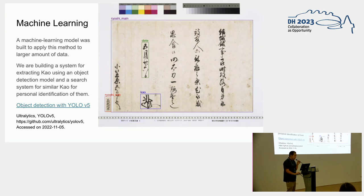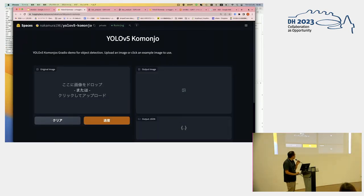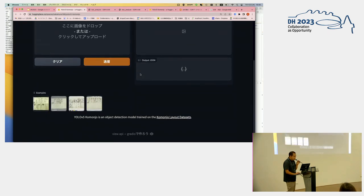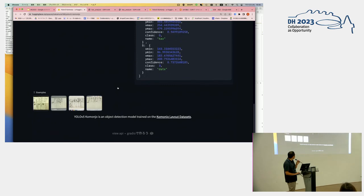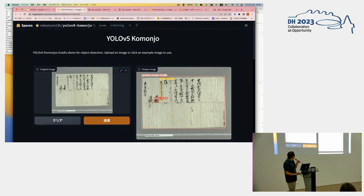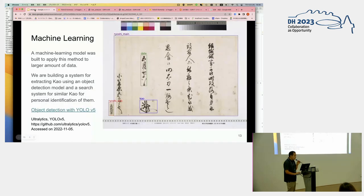For future work, we are developing a machine learning model to handle larger amounts of data. We are building an object detection model using YOLO. When we apply this model to a document, it extracts the signature part, the date part, and the document area. By using this kind of data extraction, we can expand this research to a much larger amount of data.